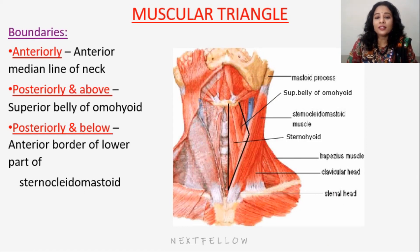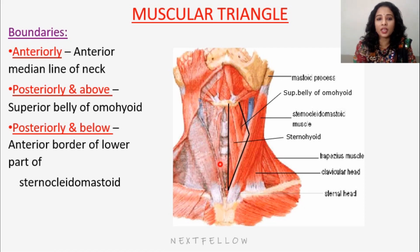The muscular triangle is made up of infrahyoid muscles and contains only muscles. The anterior boundary is formed by the midline — an imaginary line from the hyoid bone down to the suprasternal notch. The posterior-superior boundary is formed by the superior belly of omohyoid, which attaches to the hyoid bone. The posterior-inferior boundary is formed by the sternocleidomastoid, which forms the base of the triangle.